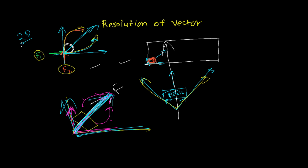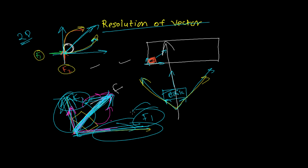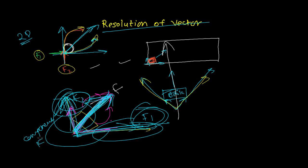Here we are learning 2D, so I'm telling you about two components. Splitting a vector into two equivalent vectors is called the resolution of vector. But you can resolve into two or more than two. The real definition: it is the process of splitting a vector into two or more parts or component vectors. After splitting, if you get F1 and F2 — two perpendicularly acting parts — those are called components of force F, or rectangular components, because there is a 90-degree angle between them.